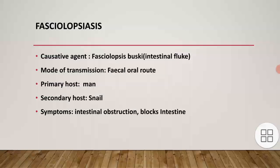The third one is fasciolopsiasis, whose causative agent is Fasciolopsis buski, also called intestinal fluke. Mode of transmission is fecal-oral route. Primary host is man, secondary host is snail. Symptoms include urinary tract infection and blood in stool and urine.